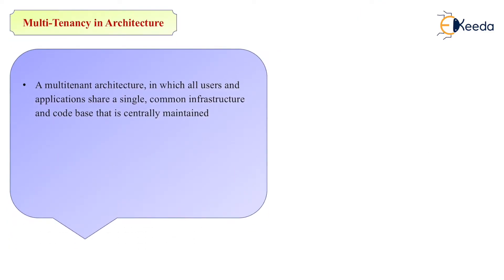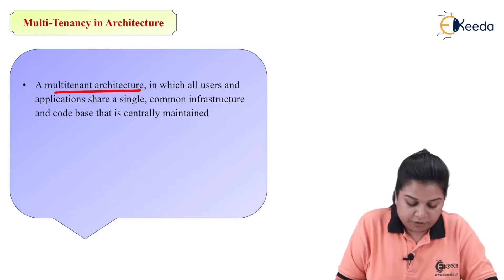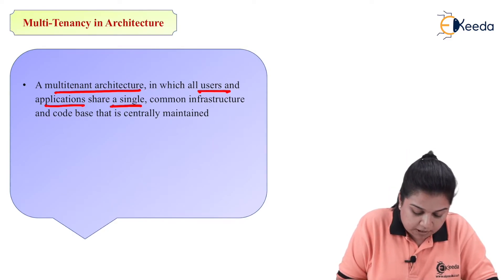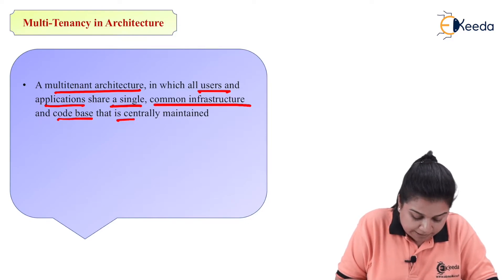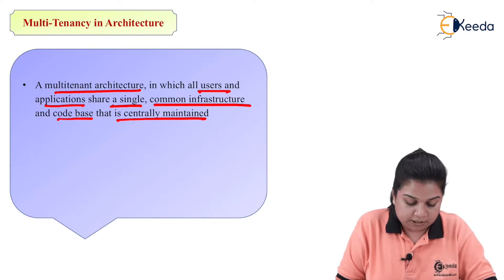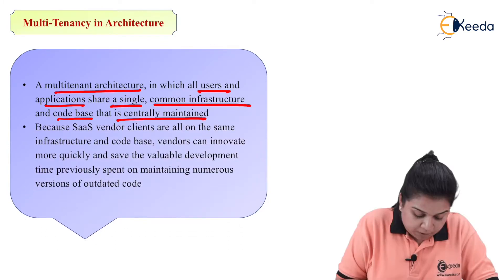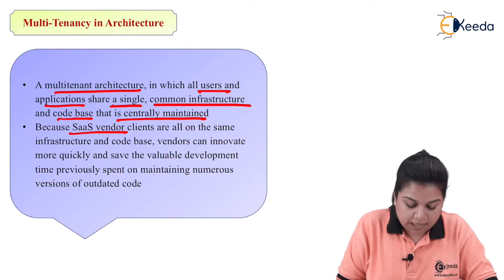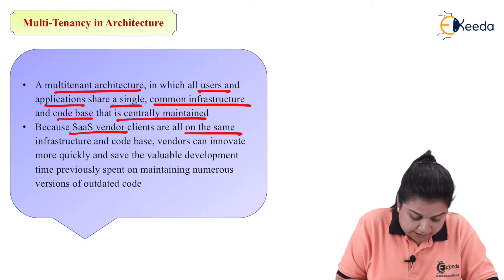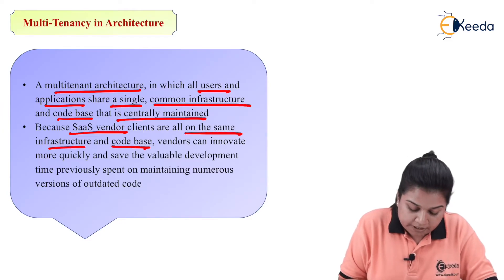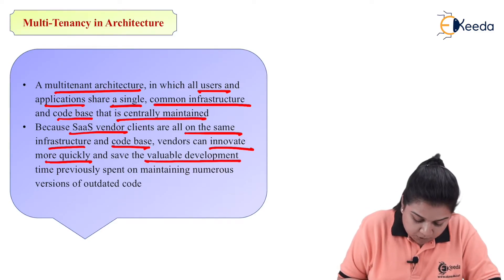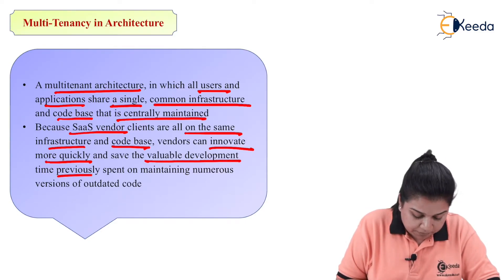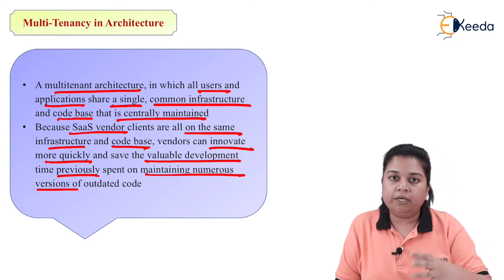In a multi-tenant architecture, all users and applications share a single common infrastructure and code base that is centrally maintained. Because all SaaS vendor clients are on the same infrastructure and code base, vendors can innovate more quickly and save valuable development time previously spent on maintaining numerous versions of outdated code.